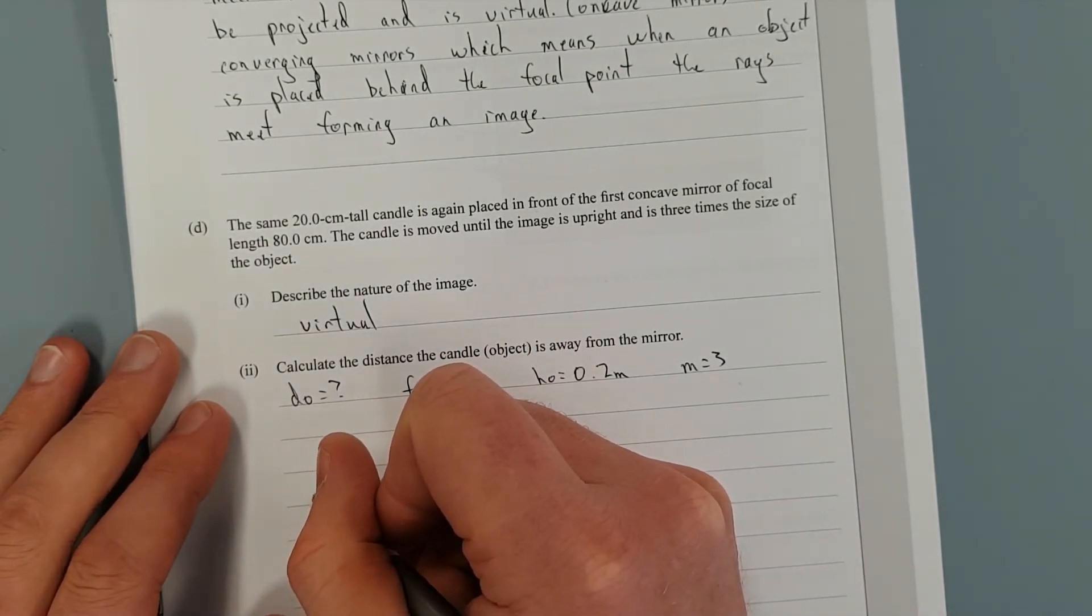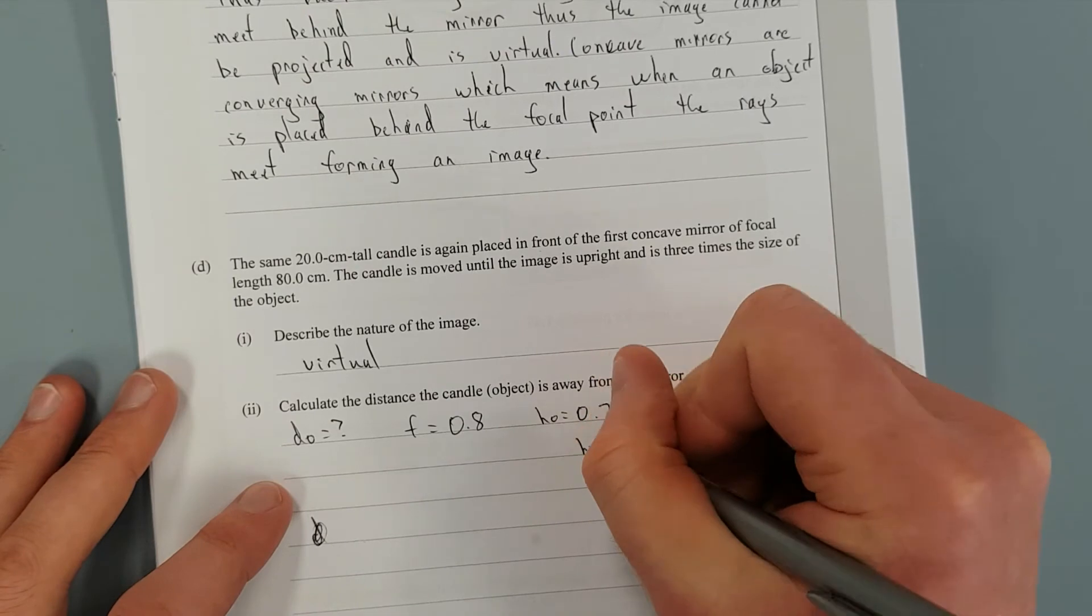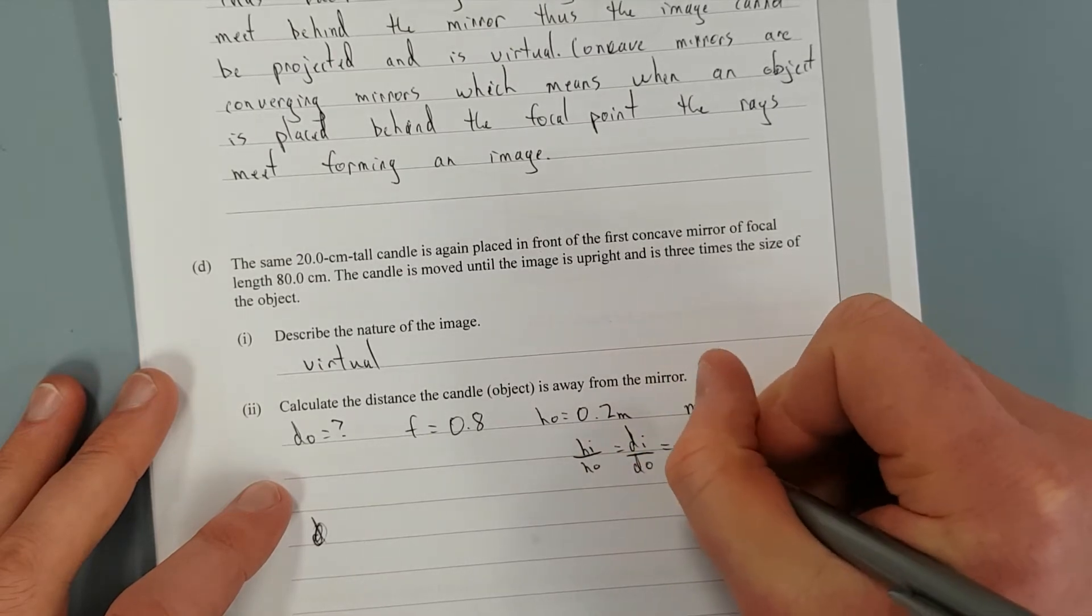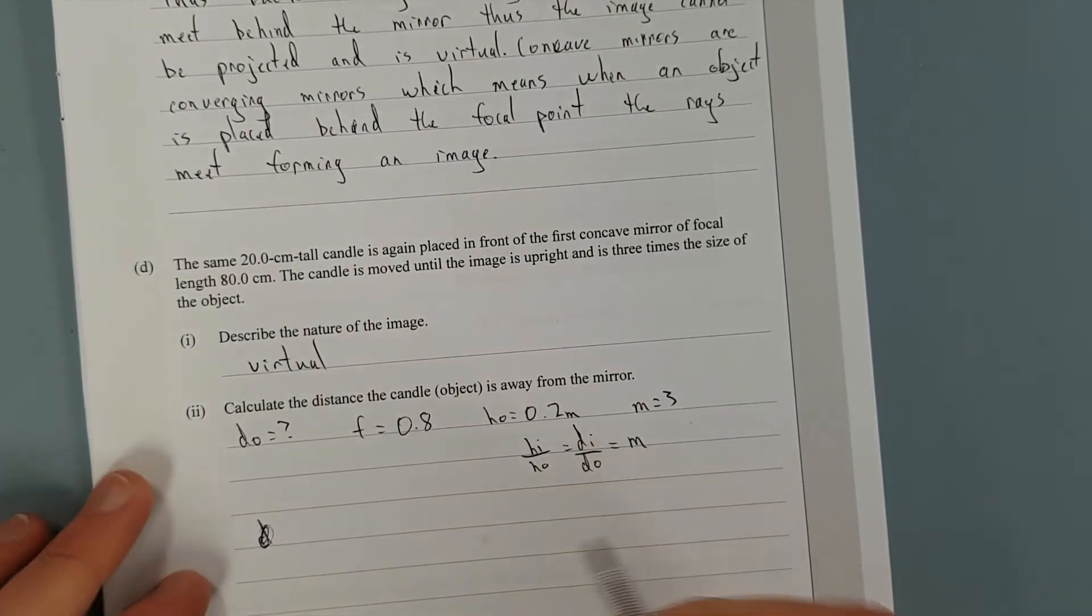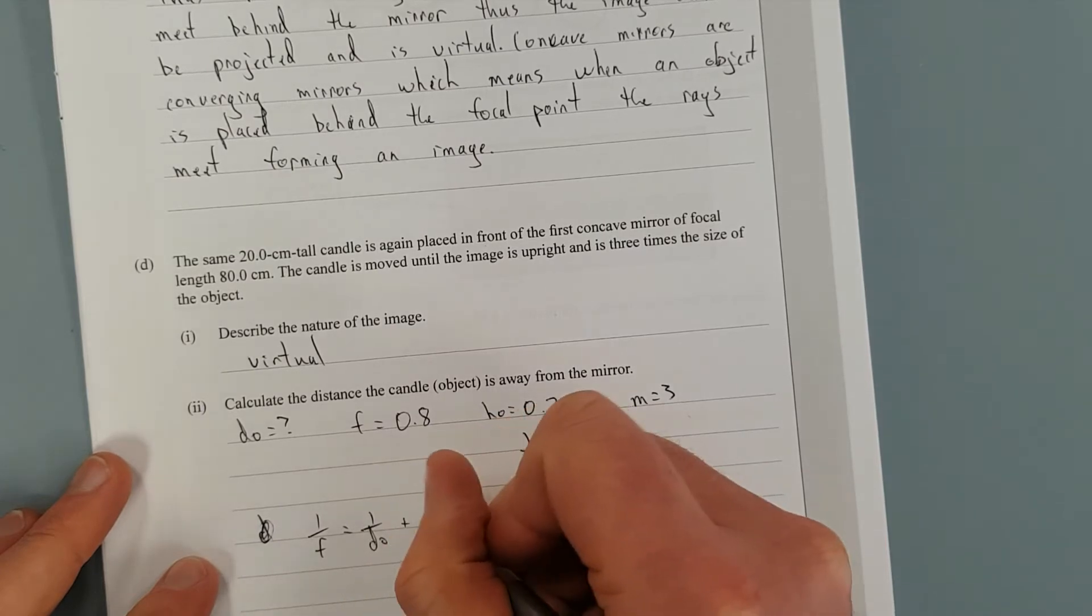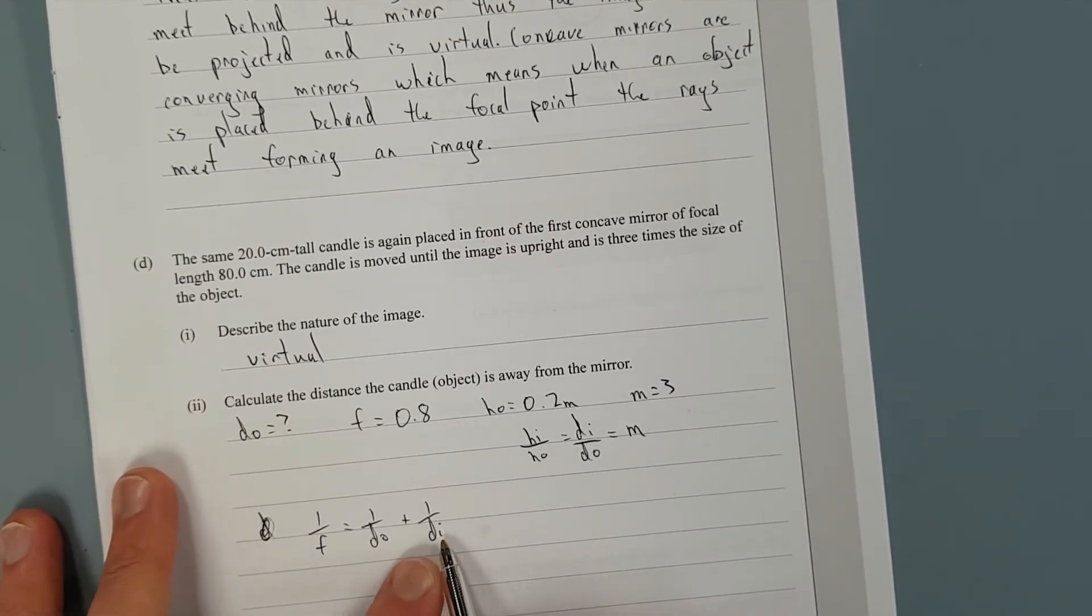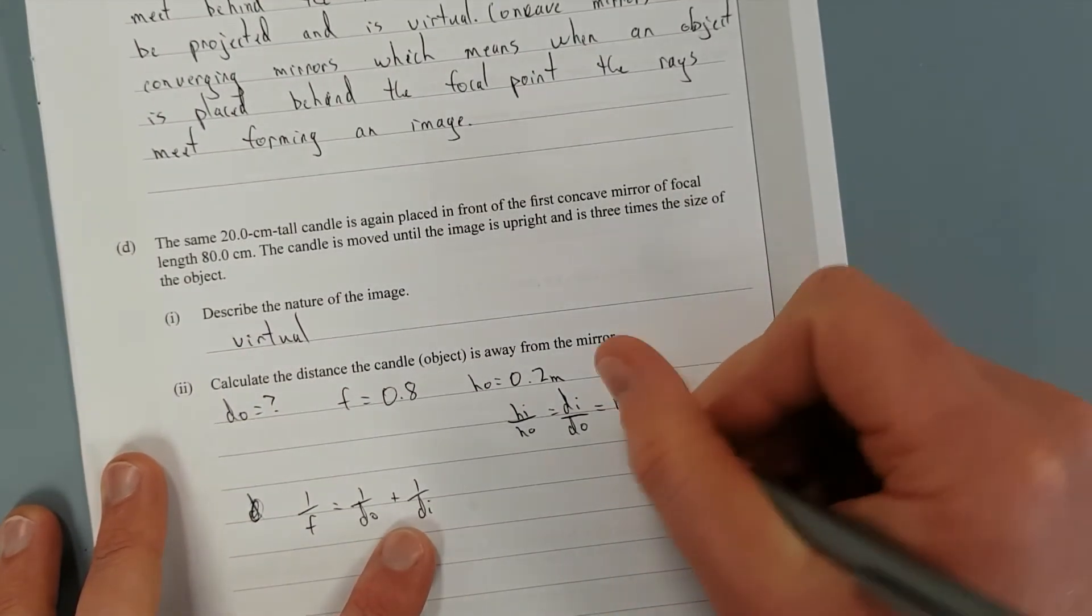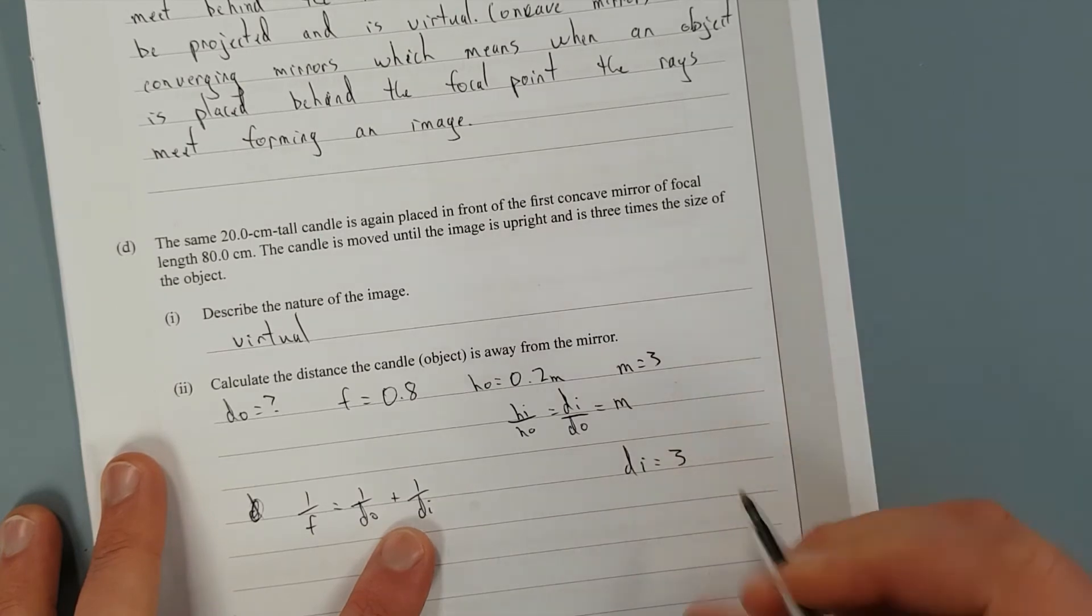So HI over HO equals DI over DO equals magnification. And so we can move, we have the magnification. One over the focal point equals one over DO plus one over DI. What we could do is we could get rid of the DI and substitute it in for DO if we could rearrange this algebraically, knowing that M equals three. So we can move the DO up, so we're going to have DI is equal to three DO.